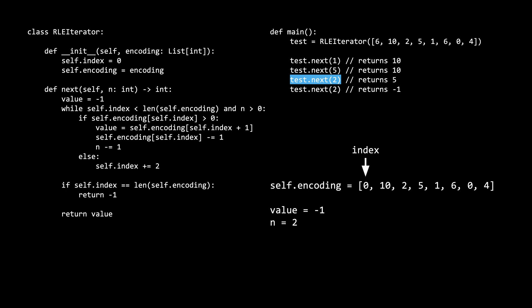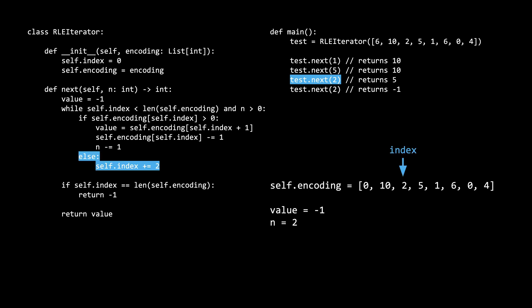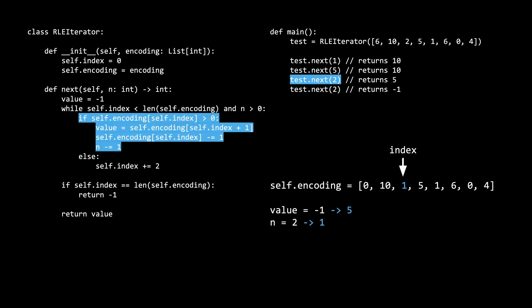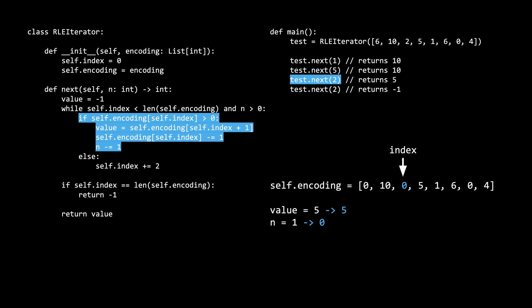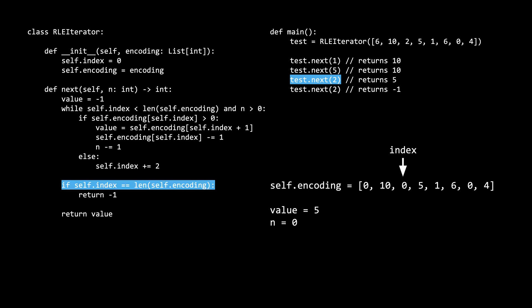Now we move on to the next line in the main function, where next is called with n as 2. We see that the while condition once again passes, but this time the if condition fails because self.encoding of self.index is 0, which is not greater than 0. So we go to the else block, which increments the index by 2, landing on the 2. We jump back up to the while loop, which is true. The if condition is also true, so we set the value to self.encoding of self.index plus 1, which is 5. We decrement the index as well as n, then loop again, setting the value once more to 5, decrementing the index to 0 and n to 0. Now the while condition fails, the if condition fails, so we return the value variable, which is 5.